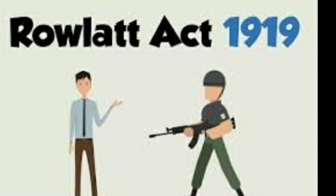Rowlatt Act. In 1919, the British government passed the Rowlatt Act. The Act gave the government the power to arrest and imprison people without a trial. The Act led to widespread protest. The Rowlatt Act came to be known as the Black Act, as it gave the British government the power to stop newspapers from reporting and printing news. The Jallianwala Bagh massacre also happened in 1919, and the massacre shocked Indians all over the world. The movement for freedom from the British became even stronger.